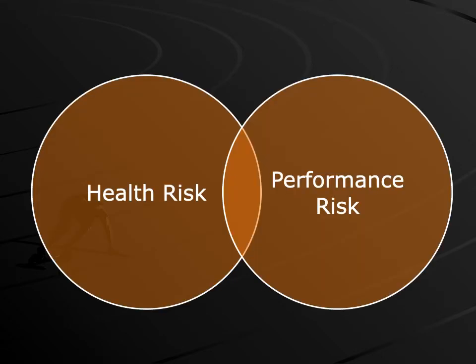One thing coaches should understand is that health risk and performance risk go side by side. The risk factors for an athlete's health also risk his performance. In other words, if the athlete is training healthy, his performance improves. If the athlete has any subclinical illness or injury but is still training, he may not recover adequately or take up the training load effectively and his performance will be at risk. The more the athlete's health is at risk, the more his performance is also at risk. So protecting athlete's health is essential for performance enhancement.